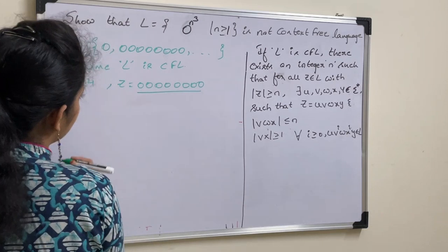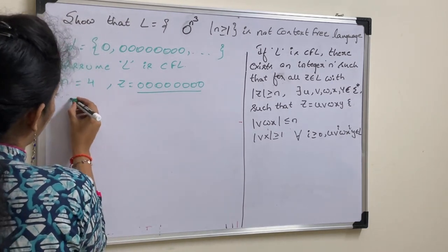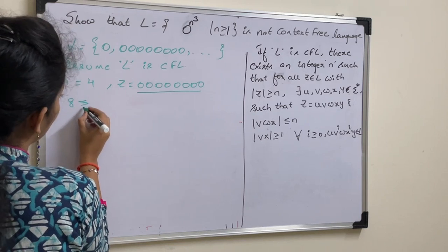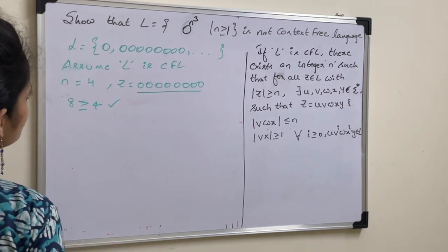What will be mod z for this? We have total string length is 8. 8 is greater than or equal to n, which is 4. Condition true.